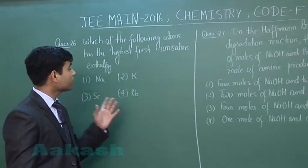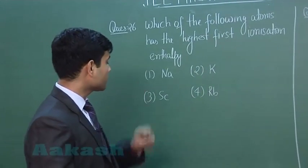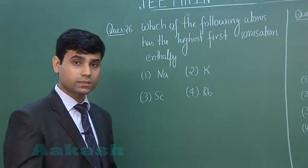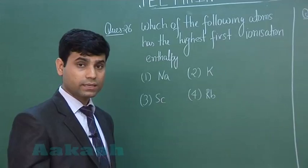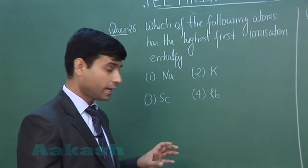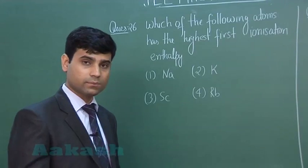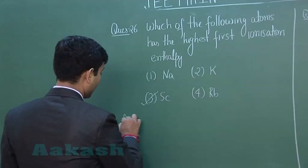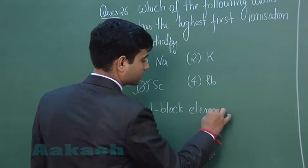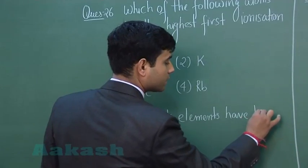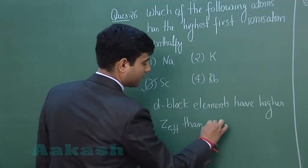The next question: which of the following atoms has the highest first ionization enthalpy — sodium, potassium, scandium, or rubidium? Sodium, potassium, and rubidium are s-block elements, while scandium is a d-block element. D-block elements have higher effective nuclear charge (Z effective), hence higher ionization enthalpy compared to s-block elements. So the correct answer is option three, scandium.